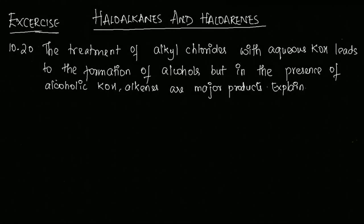The next question here is 10.20. The question reads: the treatment of alkyl chloride with aqueous KOH leads to the formation of alcohol, but in the presence of alcoholic KOH, alkenes are major products. Explain.